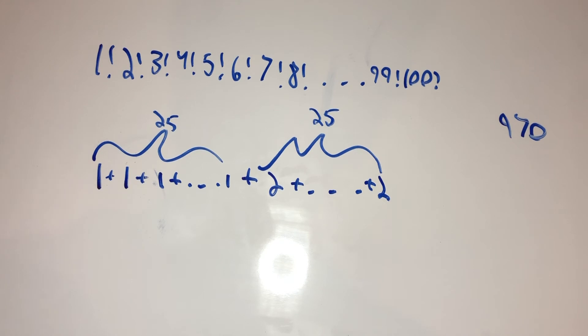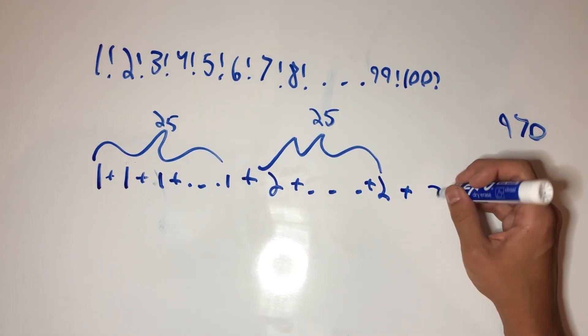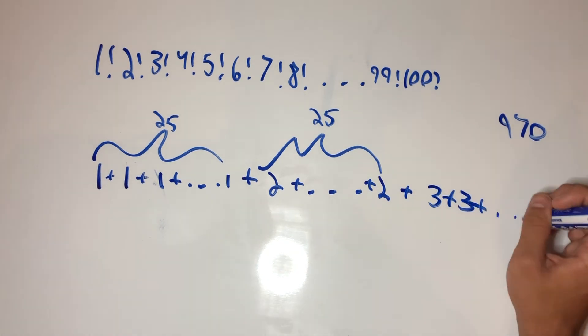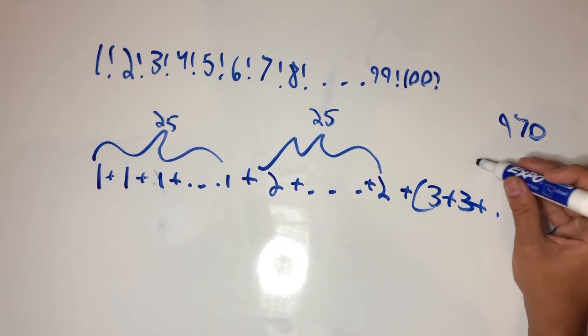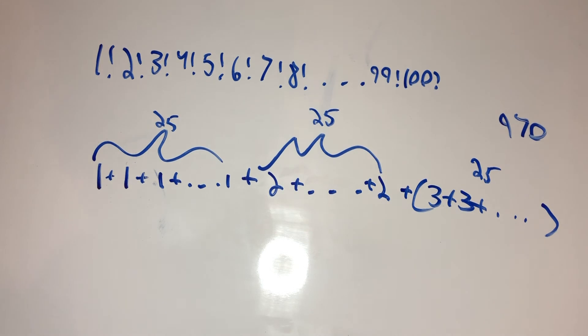And now, when we go from 50 to, sorry, from 75 to 99, there are going to be another 3 factors for each one. And there's going to be 25 of those. But, and for 100, there's going to be 4. So, plus 4.